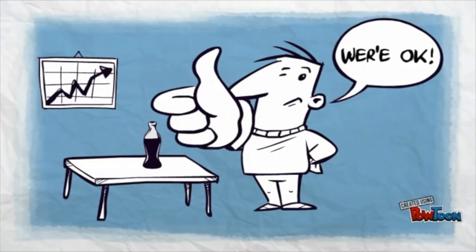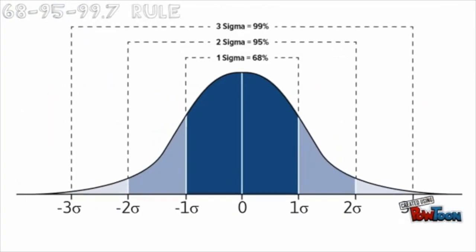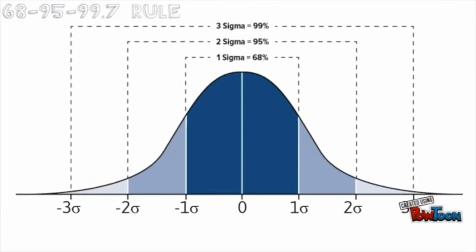In election polls, this is when they usually use this to predict the outcome of the final result. Representative sampling assures that inferences and conclusions can reasonably extend from the sample to the population as a whole.